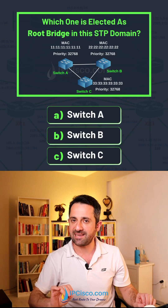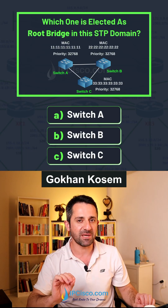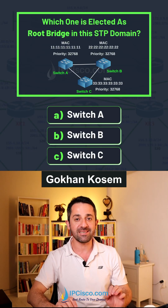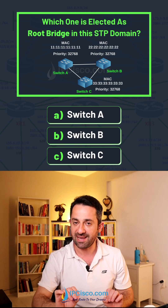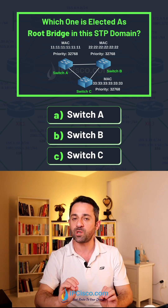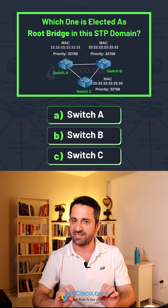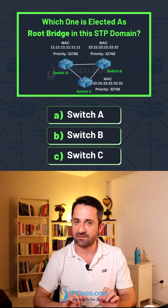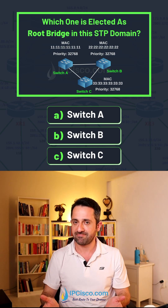Which one is elected as root bridge in this STP domain? As you can see, there are three switches and one of them will be root bridge. For root bridge election, we need bridge IDs. What is a bridge ID?